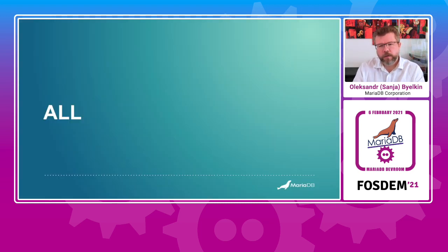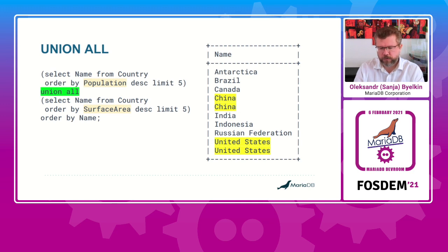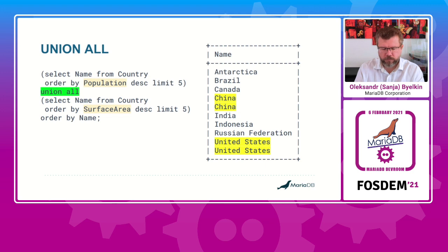ALL instructs the server not to remove duplicates. The result should be obvious in some terms. Here we just used our first query but with ALL, and you can see duplicates are present — 10 records are returned.